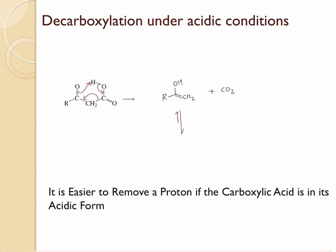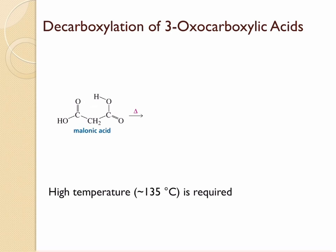It is harder for beta dicarboxylic acids to undergo decarboxylation. Here is an example: malonic acid. Why is it called a beta dicarboxylic acid? This is one carboxylic acid functional group and this is another. These two carboxylic acids are in the beta position with respect to each other — this is the alpha carbon and this is the beta carbon — so with respect to one functional group, the other carboxylic acid is in the beta position. That is why they are called beta dicarboxylic acids.